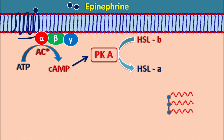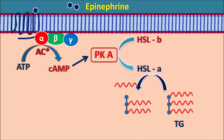Triglycerides are made up of three fatty acids along with glycerol. Each fatty acid is going to be removed such that the free fatty acids are released. Since it is made up of glycerol and three molecules of fatty acids, they are called triglycerides. Hormone sensitive lipase A acts on the triglyceride such that one of the fatty acids is released, initially forming DAG, diacylglycerol. Diacylglycerol has two fatty acids, and one fatty acid is released as a free form.